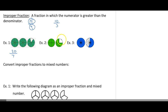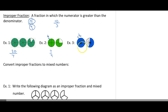Looking at the next one, these pies are broken up into fourths. So if I look, each piece is equivalent to 1 fourth. How many fourths do I have here? I have 1 fourth, 2 fourths, 3 fourths, 4 fourths, 5 fourths, 6 fourths, 7 fourths. And then over here, each piece here represents 1 sixteenth. I have 16 of them here and 9 of them here to give me 25 sixteenths. So this is an improper fraction.